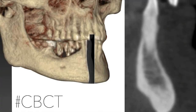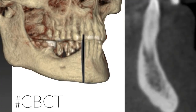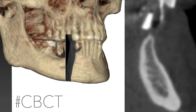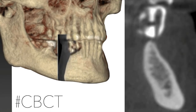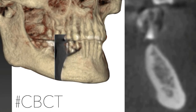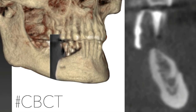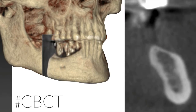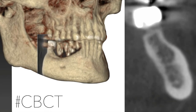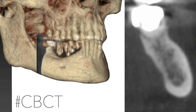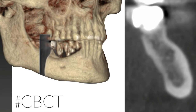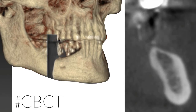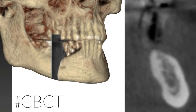Secondly, we took a CBCT of our patient, in which we can appreciate that the defect is both vertical and horizontal — so a combined defect. We always take CBCT with a radiological guide in order to analyze the correct ideal final 3D position of our teeth in relationship to the bone anatomy.